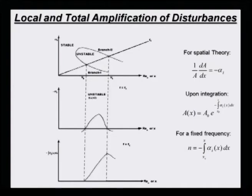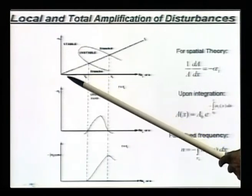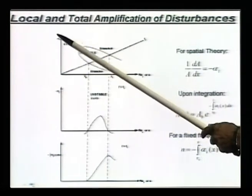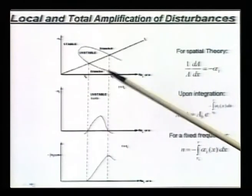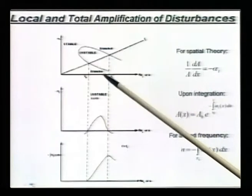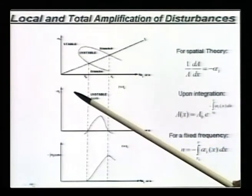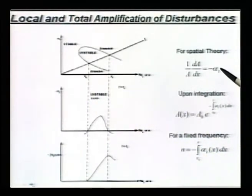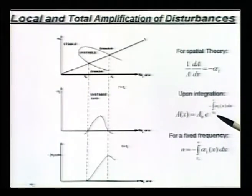If you do that, this is the way we said - we follow a fixed frequency disturbance, those are the rays starting off from the origin. On this side we have plotted the non-dimensional frequency, and on this side we have plotted the Reynolds number or x. A constant frequency disturbance goes like this. It is only during the unstable path given by branch 1 and branch 2 of the neutral curve that the amplitude increases. The relative growth rate is given by minus of alpha_i, so if we integrate, we get the amplitude at any station x in terms of the amplitude at some reference station and e to the power minus alpha_i dx.